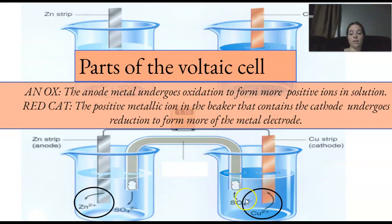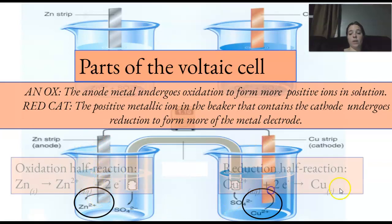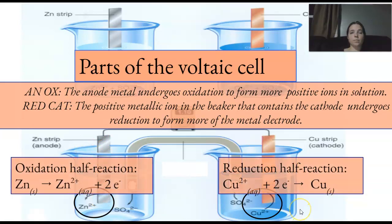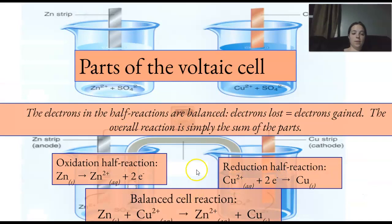The positive metallic ions in the beaker that contain the cathode undergoes reduction to form more of the metal electrode. So, you get more of this, less of this. So, it reduces here. You get less of this. You get more of this. The reducing agent, oxidizing agent. All right? So, this one loses the electrons. This one gains the electrons. So, it gets bigger.